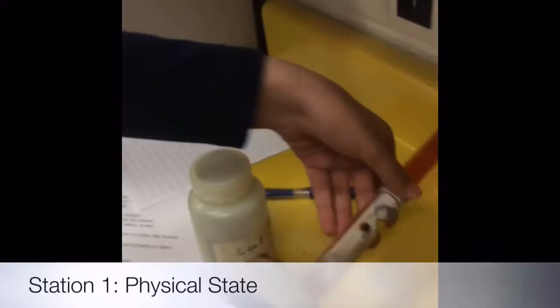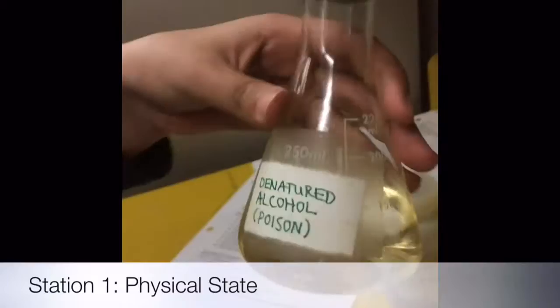The lead is a solid in multiple pieces. The denatured alcohol is liquid, see-through, watery, and yellowy in color. The corrosive poison is gas, red and see-through. It's trapped in there so it doesn't move.